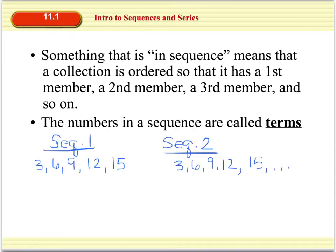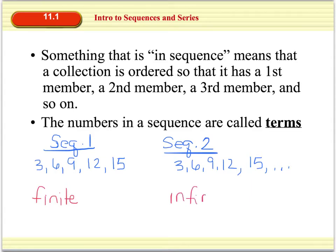If we look at sequences 1 and 2: sequence 1 goes 3, 6, 9, 12, 15, and it stops at 15. This is what we call a finite sequence, because it has a last term. Sequence 2 goes 3, 6, 9, 12, 15, and then we have these three dots, which means this sequence continues on. Because it continues without stopping, we say that sequence 2 is an infinite sequence.